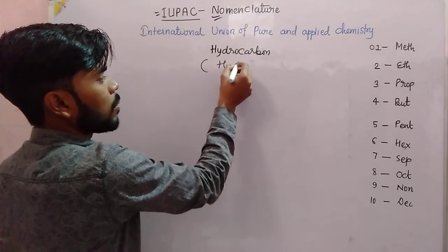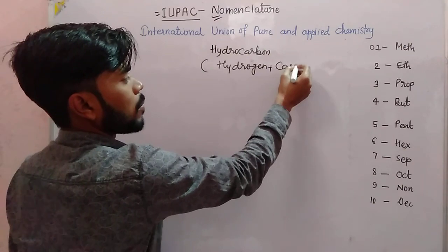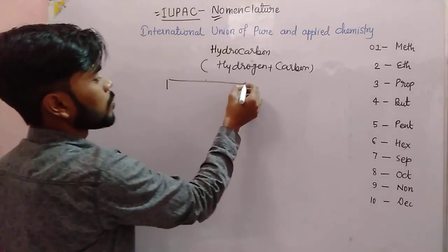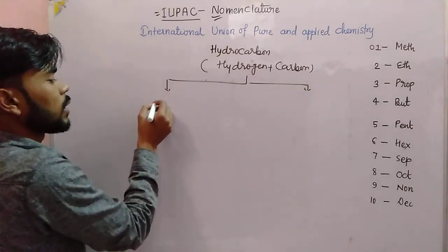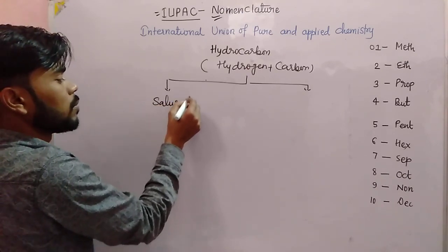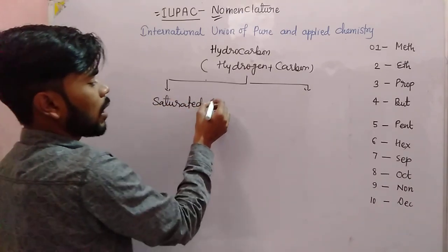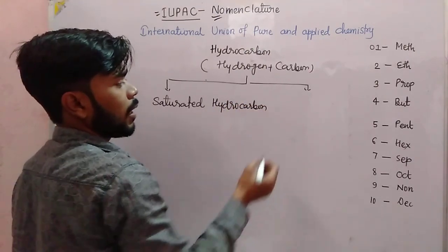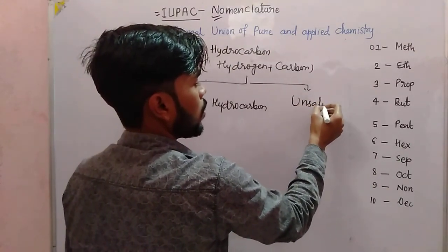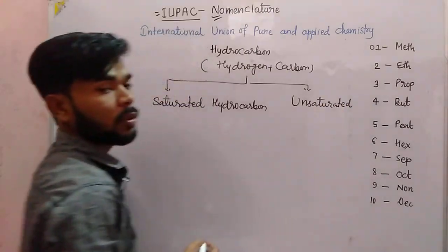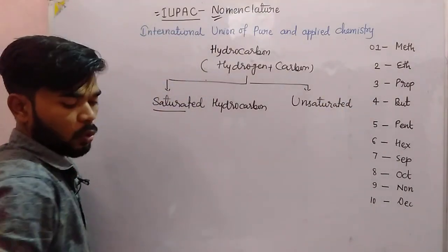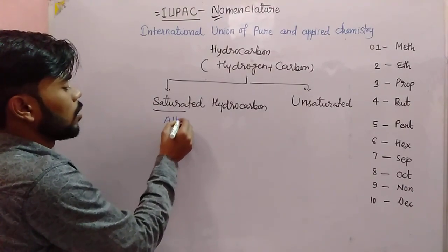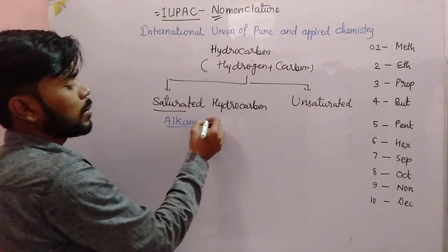Hydrocarbons are a compound of hydrogen and carbon. We have two parts. First, this is saturated hydrocarbons. Saturated and unsaturated hydrocarbons — saturated means only single bond between carbon and carbon atoms.